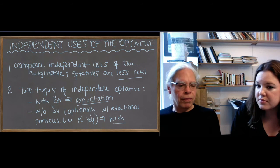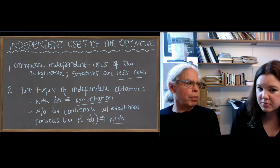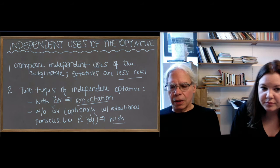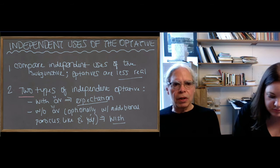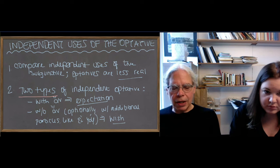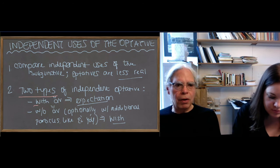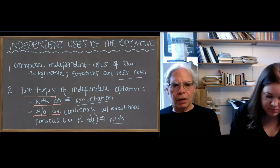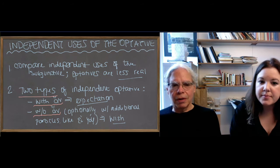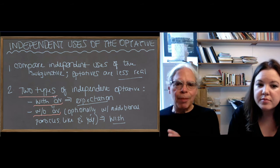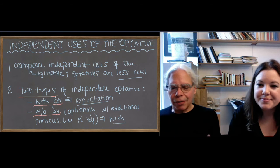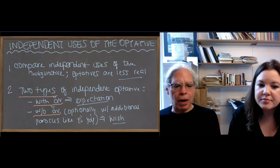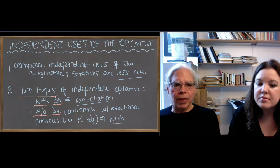When it comes to the optative, there are not three but two independent uses. Formally, the big distinction is there's one use that has 'an' — the modal particle — and another that does not have 'an.' You do have the option of over-marking the absence of 'an,' but you don't need anything in addition to mark a wish optative, the optative without 'an.'